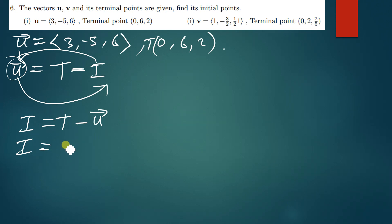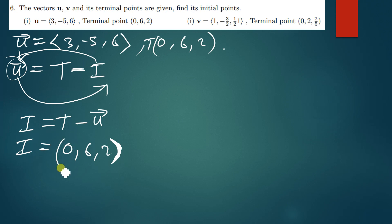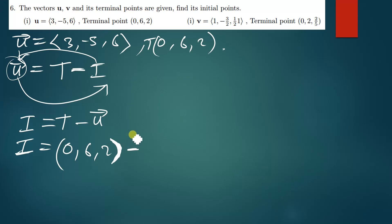The terminal has been given as (0, 6, 2) — this is a point so we use parentheses — and we subtract the vector, which has been given as (3, -5, 6). So we subtract the corresponding components.